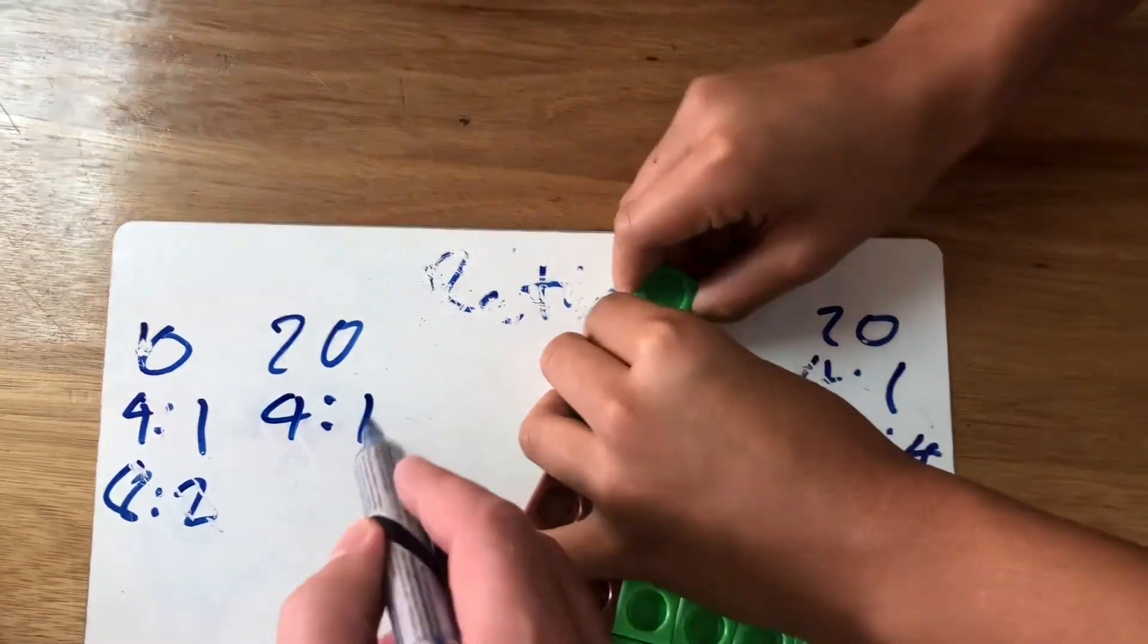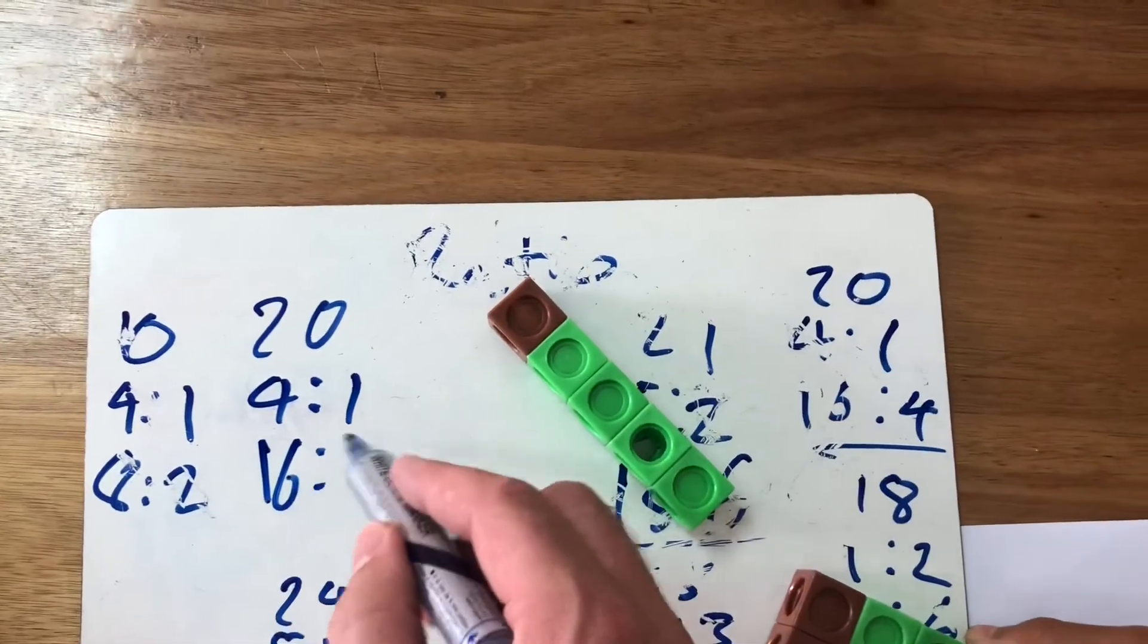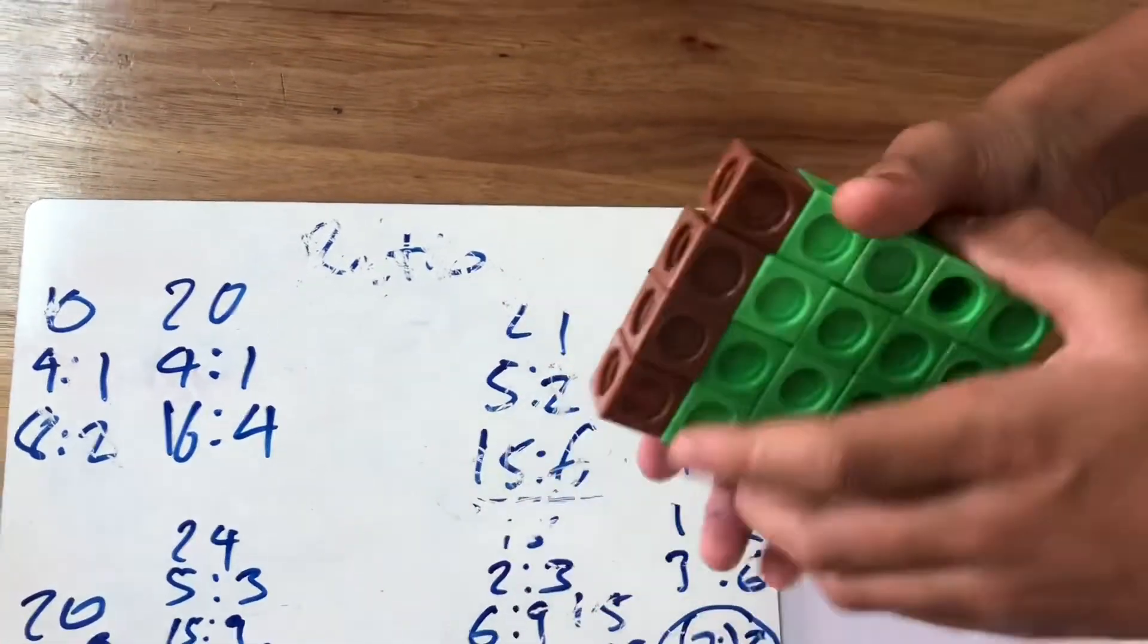So the ratio of this would be 4 to 1 rotten. So if you were to break up an item of 20 in the ratio of 4 to 1, it would be 16 to 4. Fantastic.